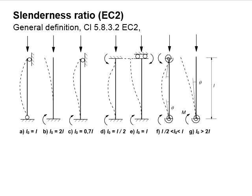For both ends pinned, the effective length will be equal to the height of the column. While for cantilever column, it will be two times the height of the column. When one end is fixed while the other end is pinned, it is considered as 0.7L.